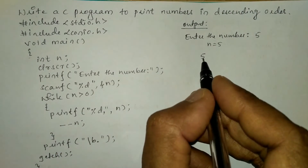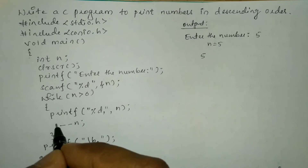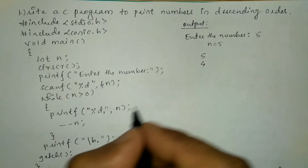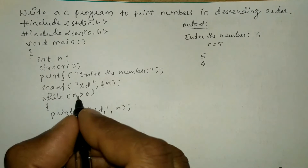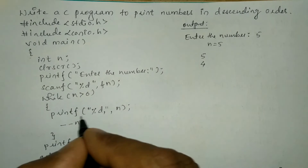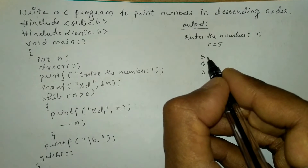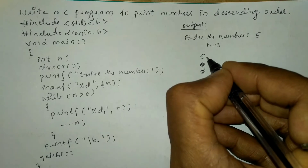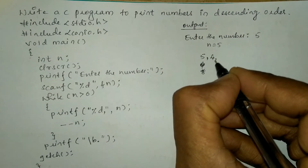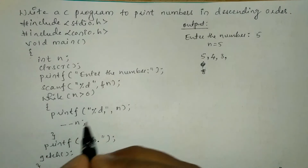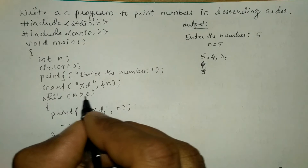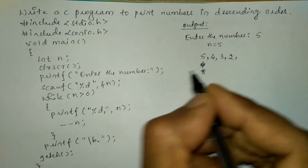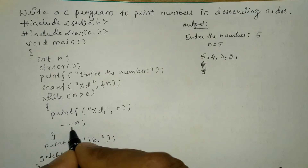So minus minus n means it is going to decrement the value of n by 1, so it will become 4. Again control transfers to while: 4 is greater than 0, yes condition is true, then it is going to print 4. 4 is decremented by 1. Again control transfers to while: 3 is greater than 0, yes it is true, so it is going to print 3. Here it is going to put a comma after each number — 5 comma 4 comma 3 comma. Then it decrements 3 by 1 to become 2. 2 is greater than 0, yes condition is true, so it prints 2. Next minus minus 2 gives 1.